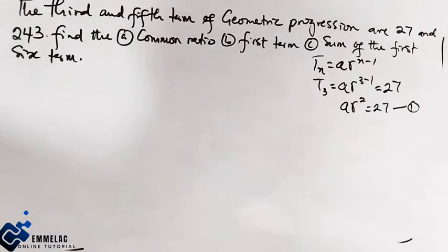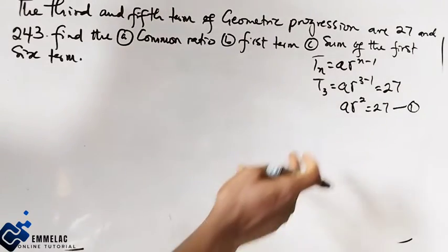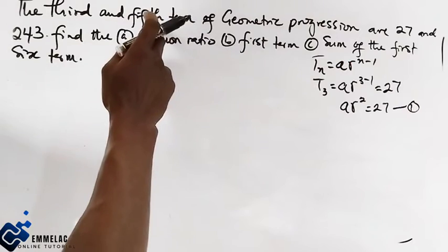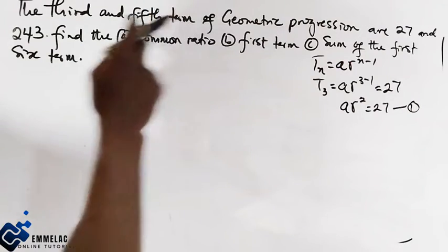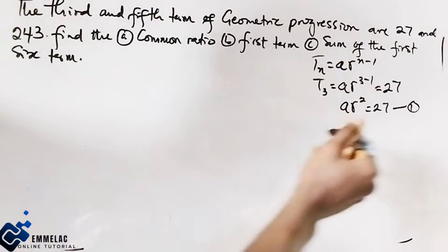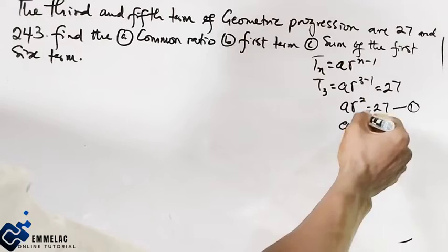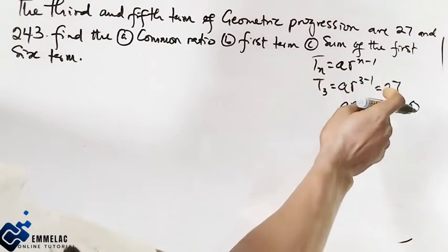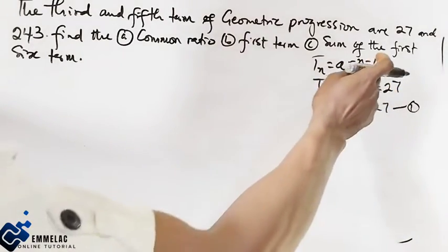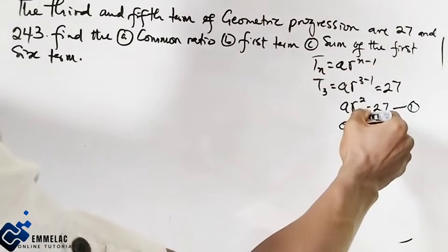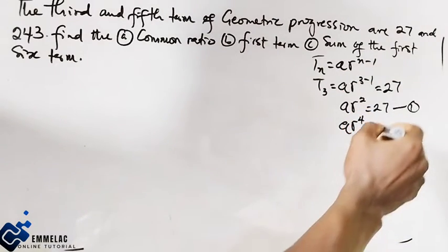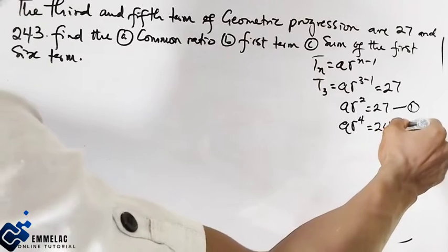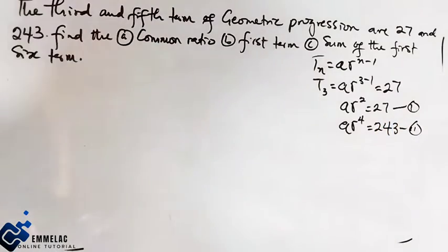The fifth term is 243. Following the same formula, that will be A times R raised to the power 5 minus 1, which is 4, giving us AR⁴ equals 243. This is equation 2.